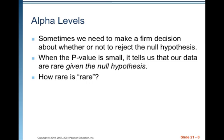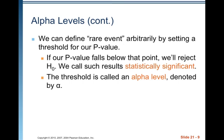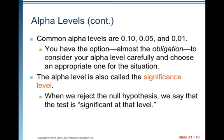Alpha levels. Sometimes we need to make a firm decision about whether or not to reject the null hypothesis. When the p-value is small, it tells us that our data are rare given the null hypothesis. But how rare is rare? How much evidence are we going to require? We could define a rare event by setting a threshold for our p-value. If our p-value falls below that point, we'll reject the null hypothesis — we call such results statistically significant. The threshold is called an alpha level, denoted by the Greek letter alpha. Common alpha levels are 0.10, 0.05, and 0.01.